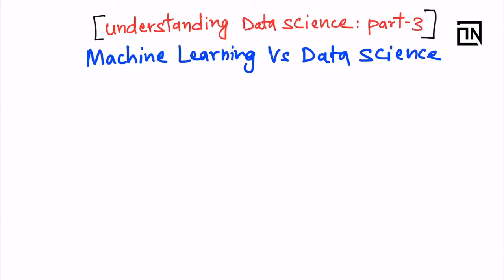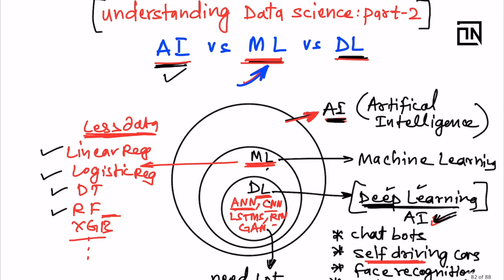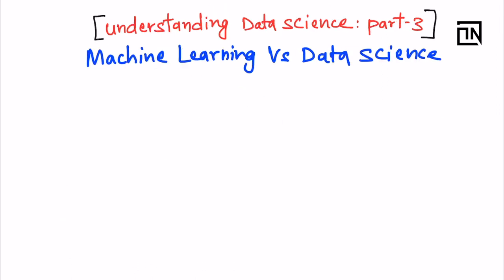This video is in continuation to the previous two videos which I made under the series of understanding data science. In the previous one I talked about artificial intelligence versus machine learning versus deep learning, and the links of both the previous videos are given in the description of this one. So please watch those first before coming to this to thoroughly relate with the concepts.